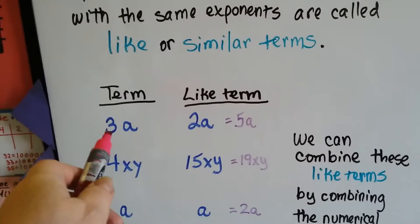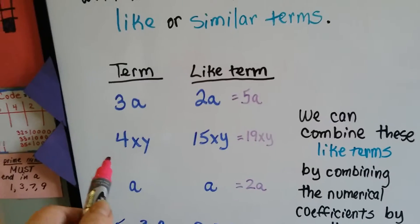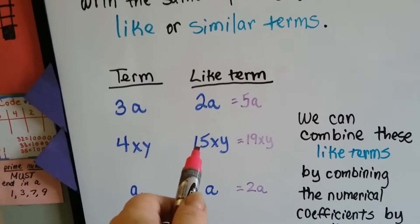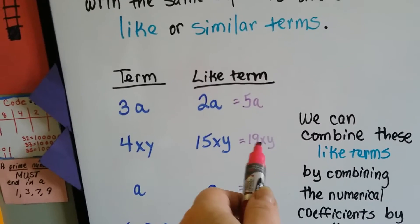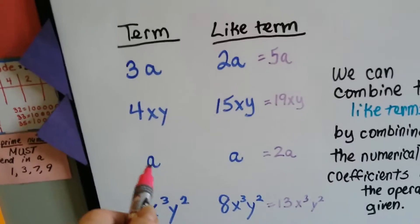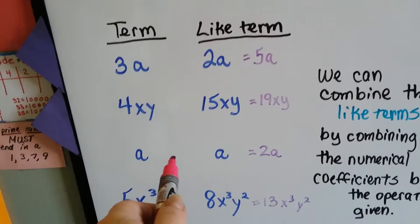This term 3a has a like term of 2a. If we added them together, we'd have 5a. This term 4xy has a like term of 15xy. If we added them, we'd have 19xy. a and a are like terms, and together we'd have 2a if we added them.